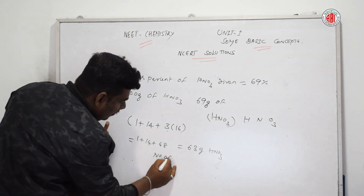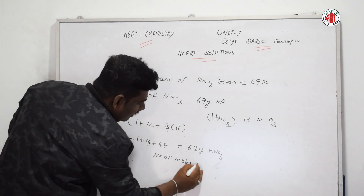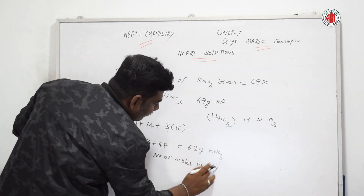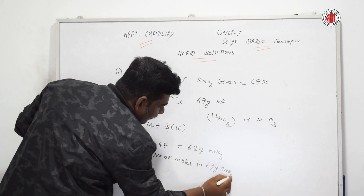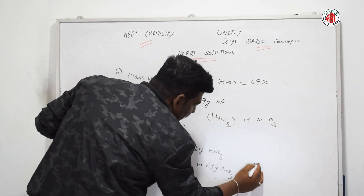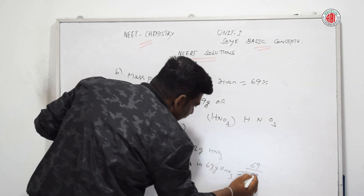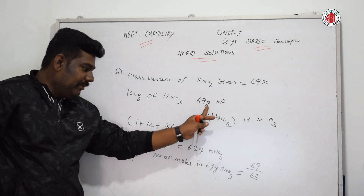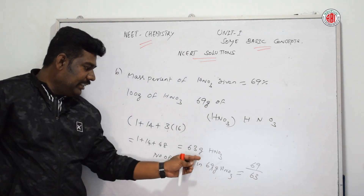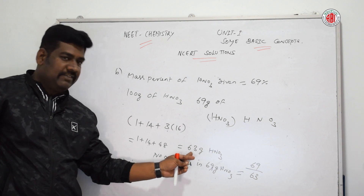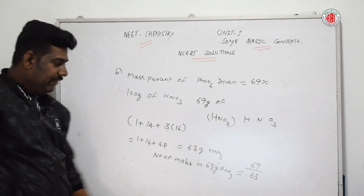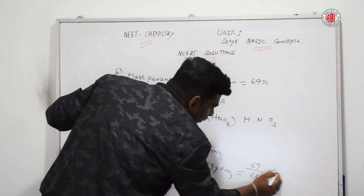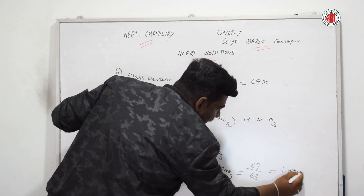Number of moles in 69 grams of HNO₃ = 69 ÷ 63, where 63 is the molar mass of HNO₃. Simplifying this, we get approximately 1.095 moles.